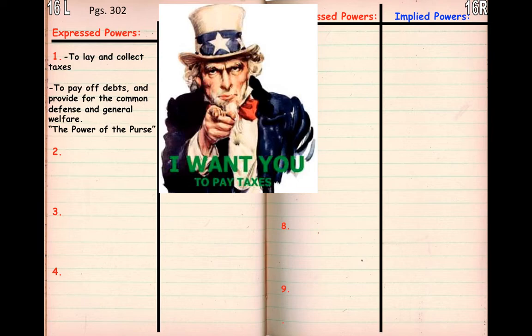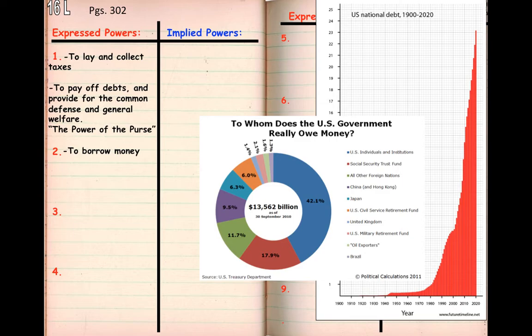This is also called the power of the purse. Congress has the power to collect money from the state government, collect money from citizens, and then use that money to pay off debts and provide for all of its services. We're also allowed to borrow money from other countries along with people within our own borders.